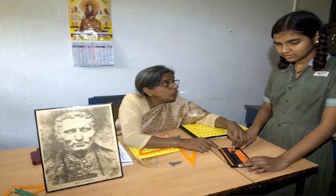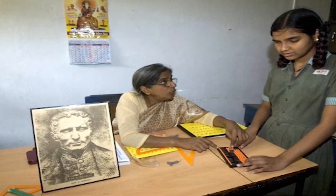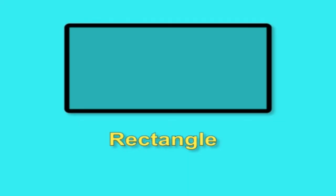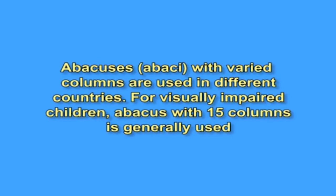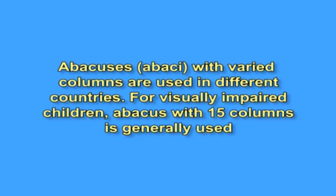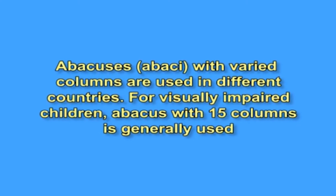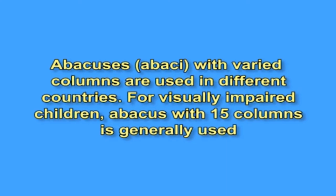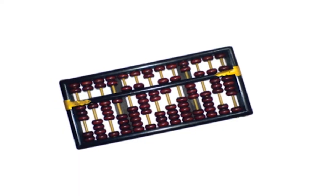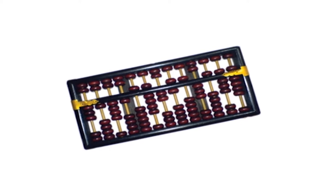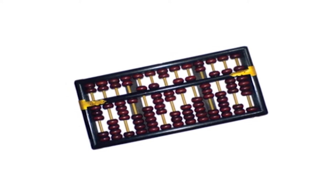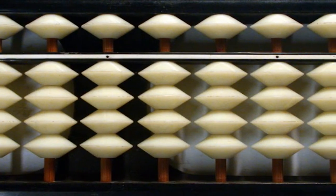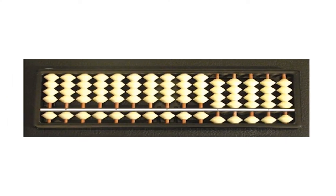First we will see abacus. Abacus is a device used by visually impaired children for doing basic mathematical calculations. Abacus is rectangular in shape. Abacuses, or abaxi, the plural form, with varied columns are used in different countries. For visually impaired children, abacus with 15 columns is generally used. A bar separates the abacus horizontally, cutting across all 15 columns, leaving two-thirds of the area below and one-third above. The lower portion is known as the lower abacus and the upper portion as the upper abacus.